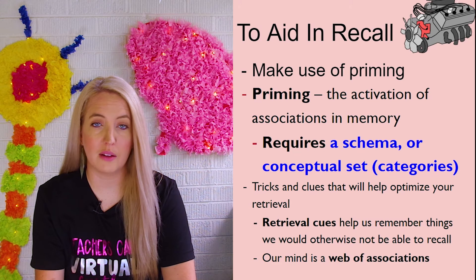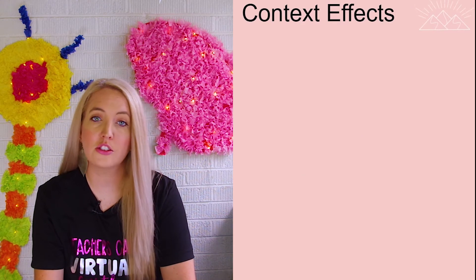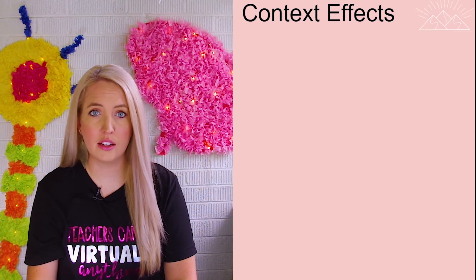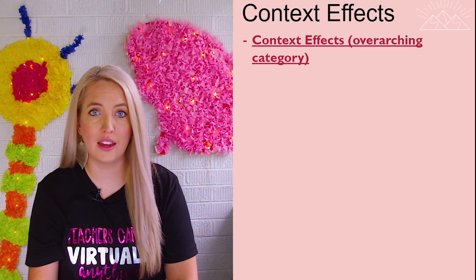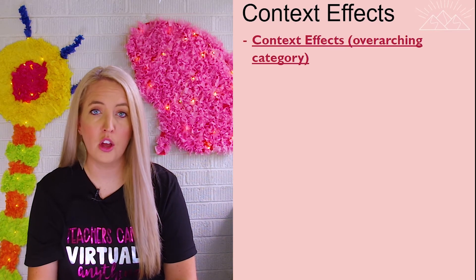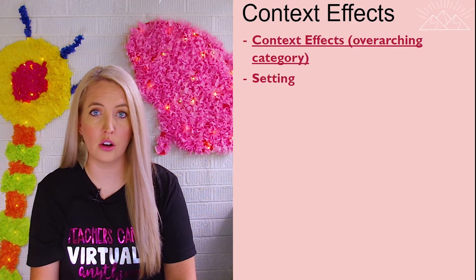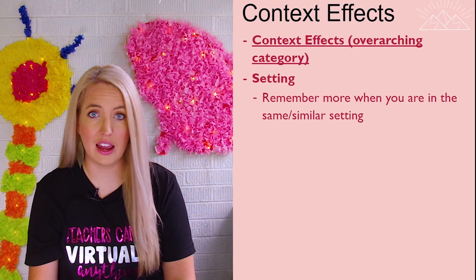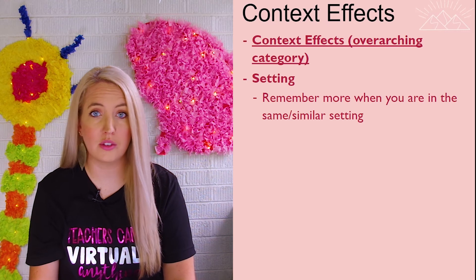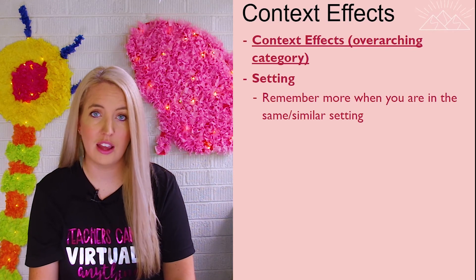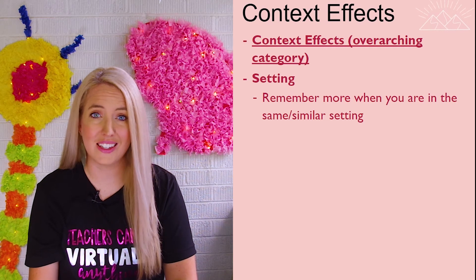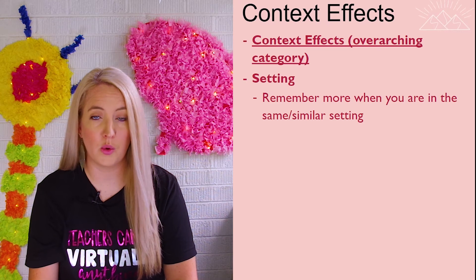There are a couple of other things we can do to help facilitate retrieval, and these are known as context effects. Context effects tells us that when we're in the same location, emotional state, or state of mind, we are going to remember more information from the last time we were in that same place. With setting, for example, you're more likely to remember information when you're in the same place as you were when you first learned it. In academics, that's why it's important to study at a desk as opposed to studying in your bed, because when you sit down to take an assessment, you're more likely to do so at a desk. When the information comes in, if you studied at a desk and then retrieve that information at a desk, you're in the same or at least a similar setting and you're going to be more likely to remember it.